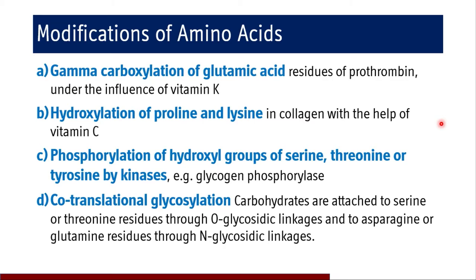Co-translational glycosylation involves carbohydrates being attached to serine or threonine residues through O-glycosidic linkage, and to asparagine or glutamine residues mostly through N-glycosidic linkages. The carbohydrate moieties are added to the protein structure. For example, isoforms of the same enzyme differ only in their carbohydrate moiety. Isoforms are coded by the same genetic locus while isoenzymes are coded by different genetic loci. The isoforms arise due to different glycosylation moieties added to the enzyme protein structure.